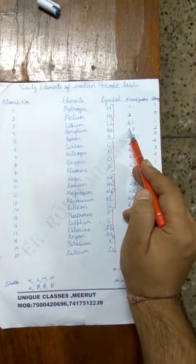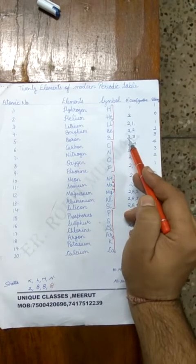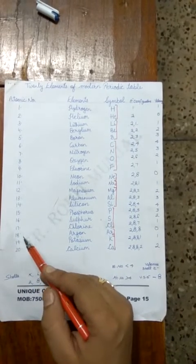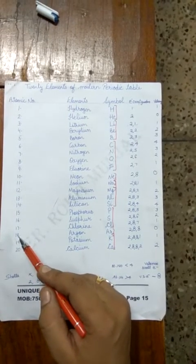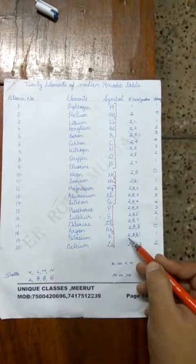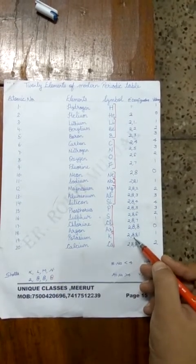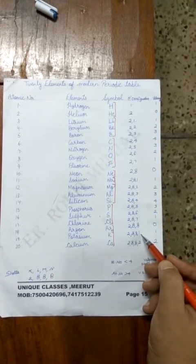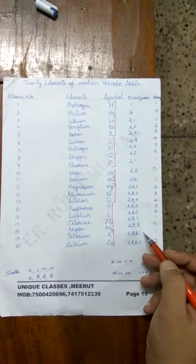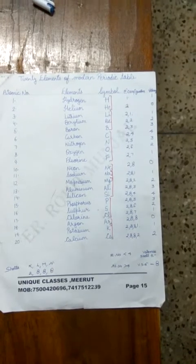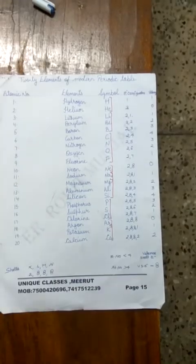For atomic number 4, the configuration is 2, 2. For atomic number 5, it is 2, 3. For atomic number 6, it is 2, 4. For atomic number 19, the electrons are distributed as 2, 8, 8, and 1 — because the third shell cannot hold more than 8. It will not be 2, 8, 9, since the third shell cannot have 9 electrons.